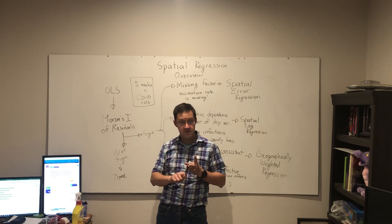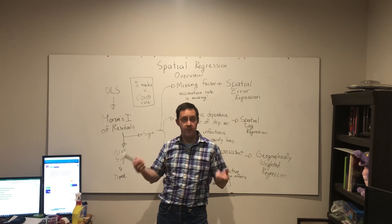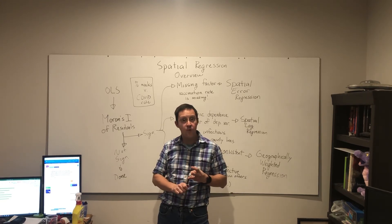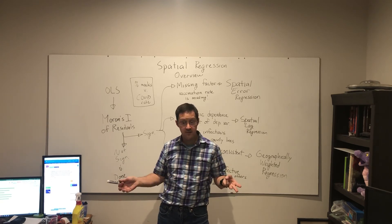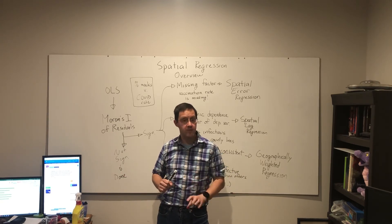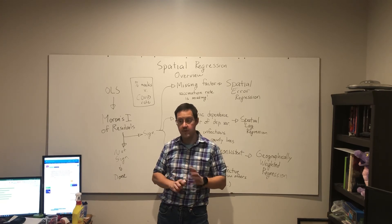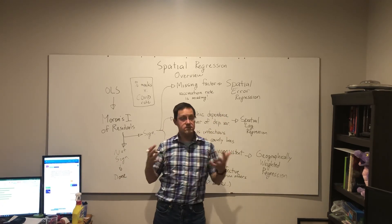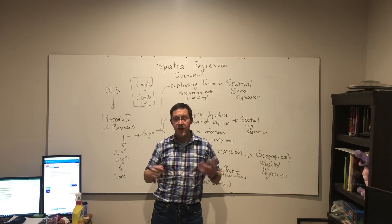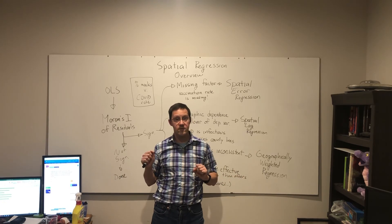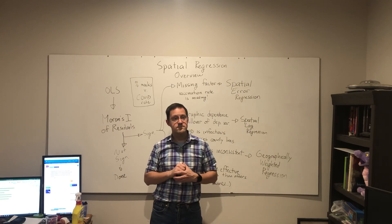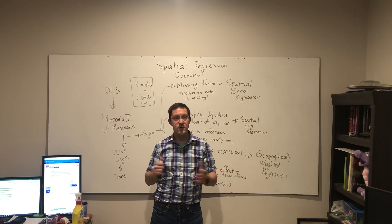So if we think the relationship itself is inconsistent across space, we can go with geographically weighted regression — and those are the three types of spatial regression. We'll be looking at spatial error and spatial lag regression in this week's set of videos. As always, if you have questions, please feel free to ask during the Zoom class or send me an email. Thank you for watching. Have a good one — I'll see you at the next video.